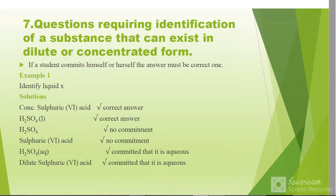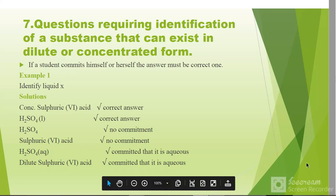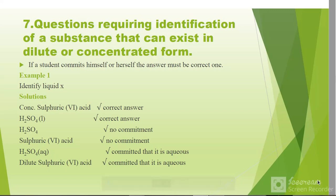Questions requiring identifying of substances that can exist in dilute or concentrated should be written. For example, during dehydration we need concentrated sulfuric acid. If you don't write concentrated sulfuric acid, you will not score. Therefore, if we are doing dehydration, dilute sulfuric acid cannot do dehydration. If the question requires you to write concentrated, you write concentrated. If it requires you to write dilute, you write dilute sulfuric acid.